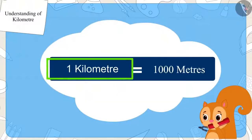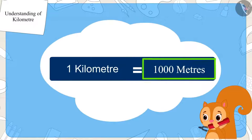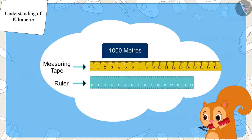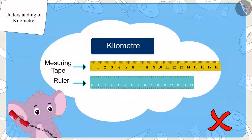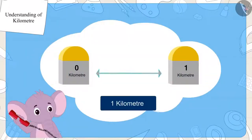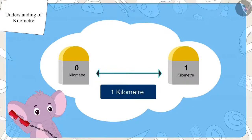If one kilometer is equal to one thousand meters, then we will not be able to measure it with a measuring tape or a ruler. So how can we measure the distance between two places? You cannot measure a kilometer with a measuring tape or a ruler. Special resources are used for this. You can only find the distance between two places by the distances written on the signs on the road.